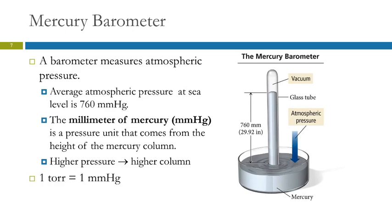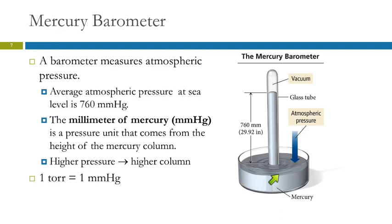How do we measure pressure? We can use a mercury barometer to measure atmospheric pressure. The original mercury barometer was pretty simple — a very long glass tube that has to be more than 760 millimeters, or more than 29.92 inches long.